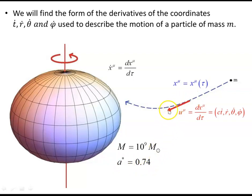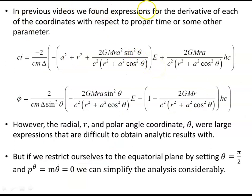The tangent vector, or four-velocity, is dx^mu / d tau — the derivative of each coordinate with respect to proper time tau. We'll go back to the coordinates found in previous videos, where we found expressions for the derivative of each coordinate with respect to proper time or some other parameter.